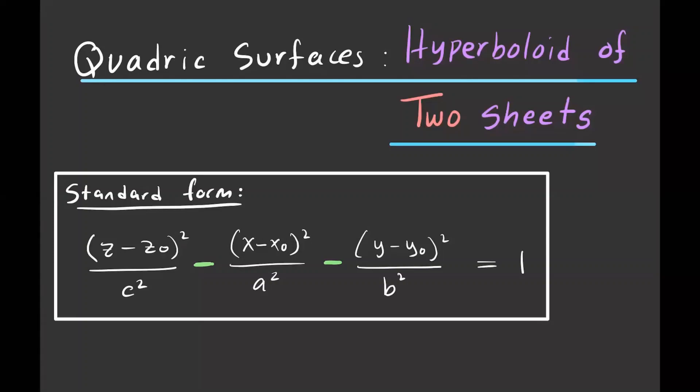Now we'll take a look at another surface: the hyperboloid of two sheets. Here's the standard form of that equation — all terms are squared and equal to a constant. Note that there are two negative signs. That's how you know this is a hyperboloid of two sheets, as opposed to a hyperboloid of one sheet, which has only one negative sign.